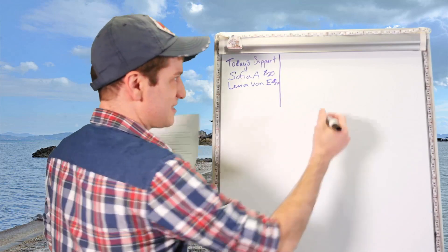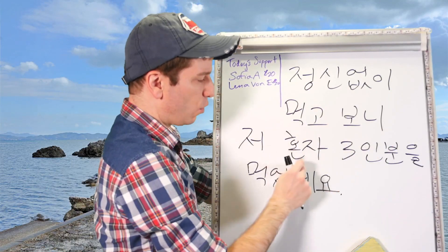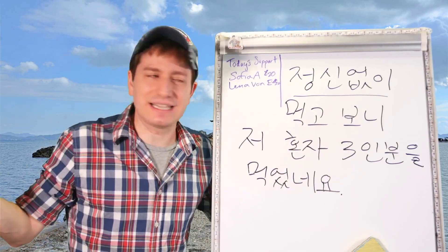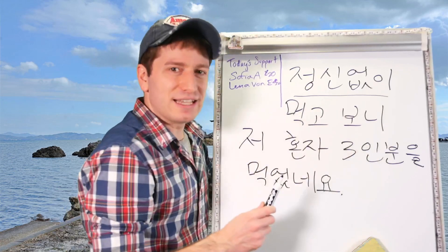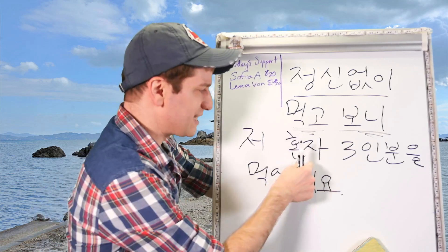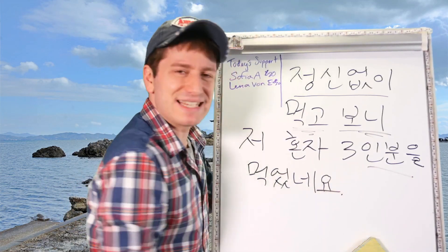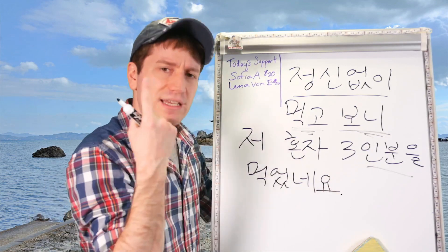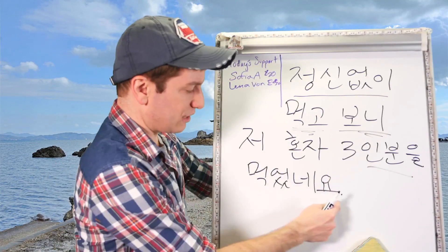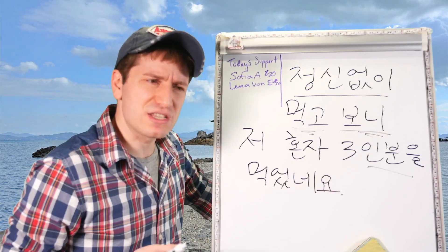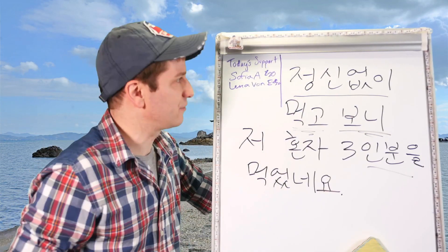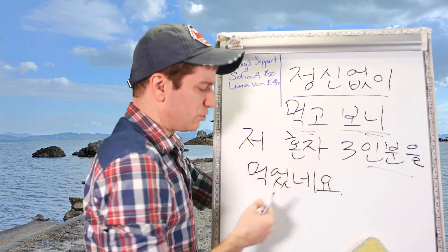Let's do our first example sentence: 정신 없이 먹고 보니 저 혼자 삼인분을 먹었네요. So I was eating frantically — 정신 없이. After I finished, I realized: 저 혼자, by myself, 삼인분 — 인분 means a serving or portion for a number of people, so 삼인분 is enough food for three people. So I realized I had eaten three portions all by myself. After frantically eating, I realized I had eaten three portions on my own.